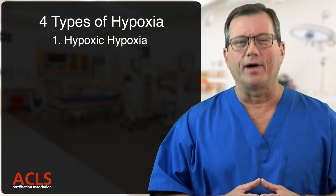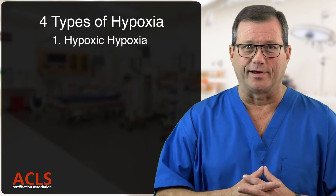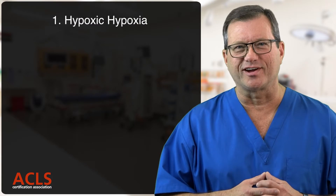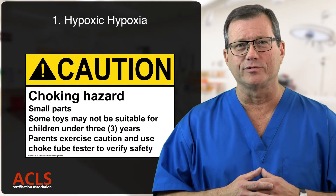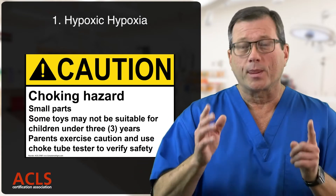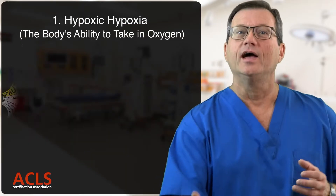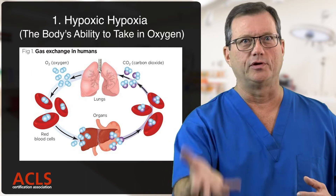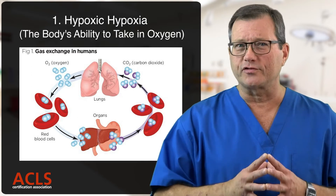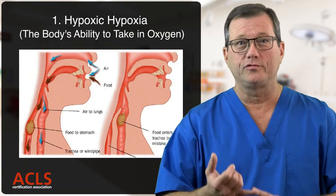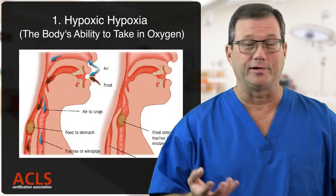Starting at the top — hypoxic hypoxia. An example of that: old school — put the bag over the head routine. The patient cannot get air in. When we're talking about hypoxic hypoxia, we're talking about the body's ability to take in oxygen as a gas. Do we have good gas exchange? Oxygen coming in, CO2 going out. Think about the gas going into the body. Other examples: choking — hypoxic hypoxia, the air can't get in.